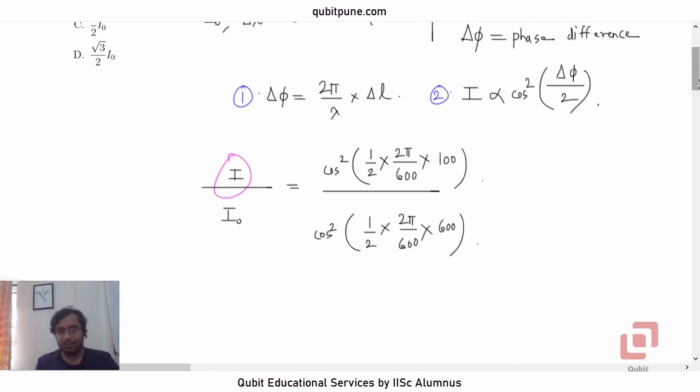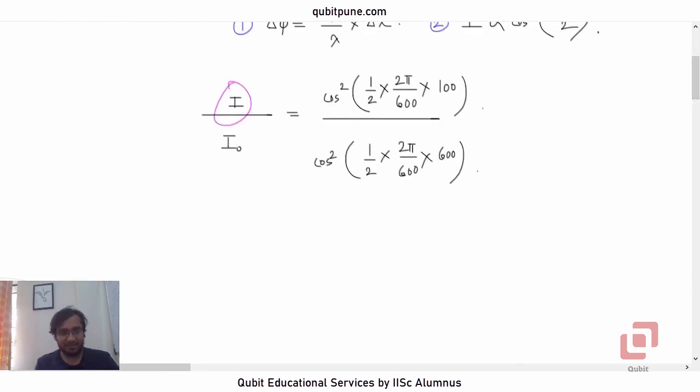Now it is a simple trigonometry problem. Cos squared, now what will we have here? 2 and 2 will get cancelled. This is 100, this is 600, so it will be cos squared pi by 6 in the numerator. In the denominator, 2 and 2 will go, 600 and 600 will go, so effectively you will have cos squared pi. Cos pi is negative 1 so cos squared pi will be 1.